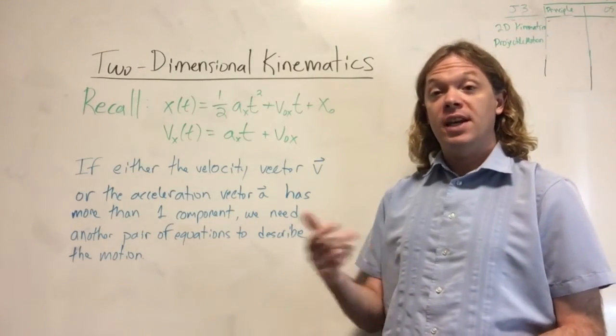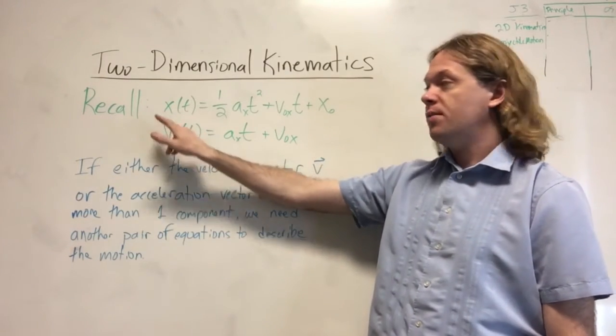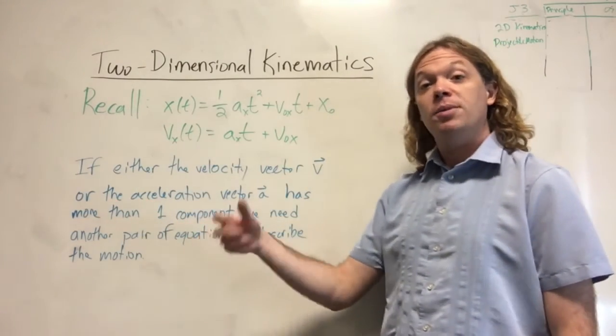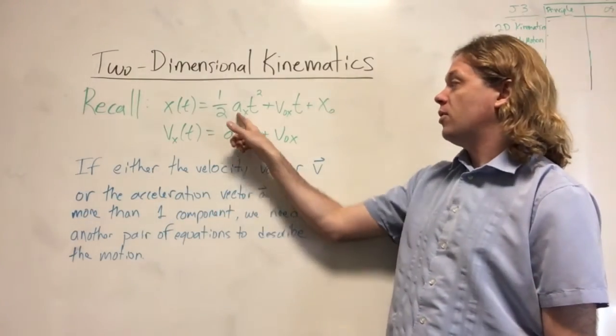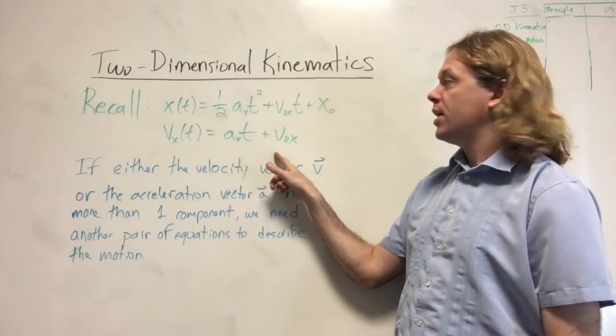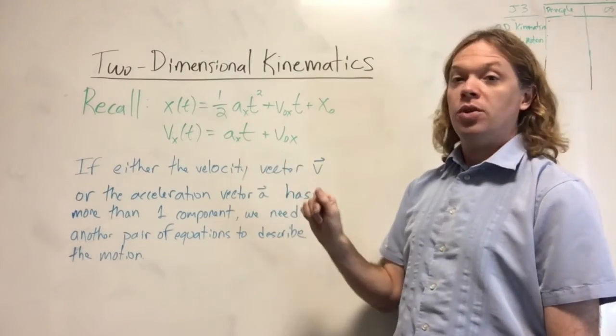So recall that we had the set of kinematic equations shown here. This tells us the position as a function of time, this tells us the velocity as a function of time. The variables that go into the kinematic equations are the acceleration in that direction, the initial velocity in that direction, the initial position in that direction, and whatever time we're talking about.